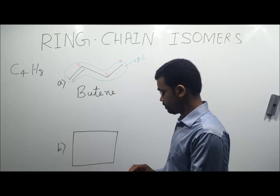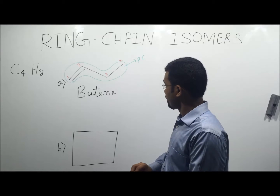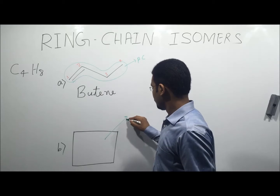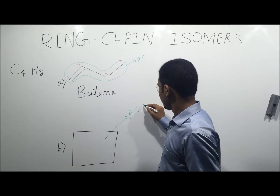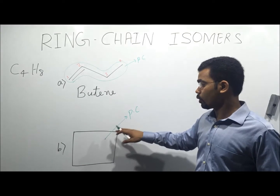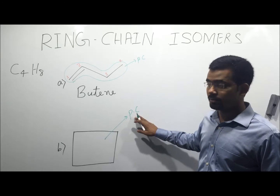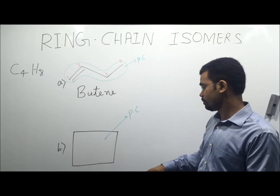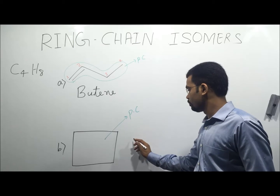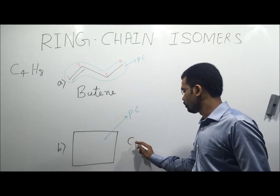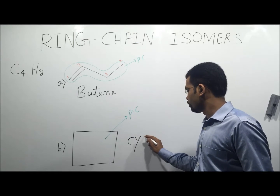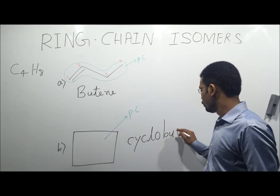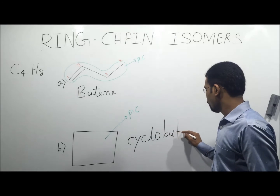For compound B, the parent chain here is a closed chain. The name of this given molecule is cyclobutane.